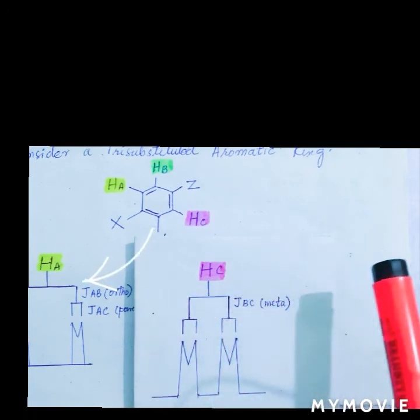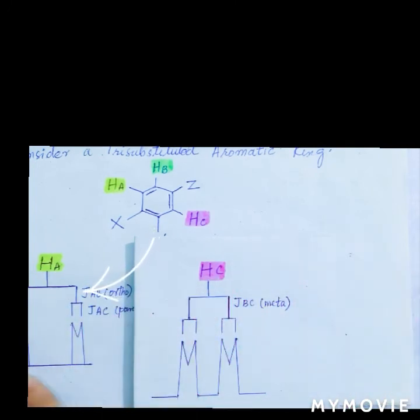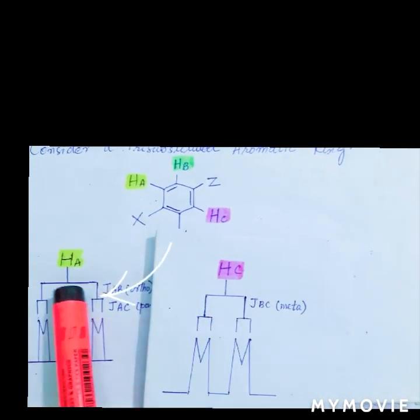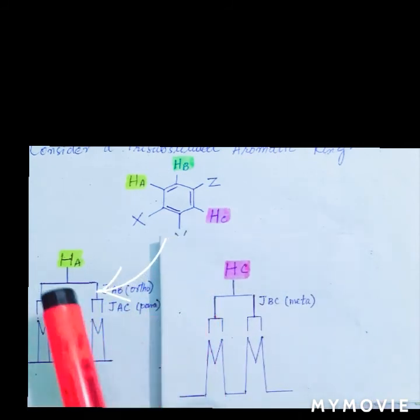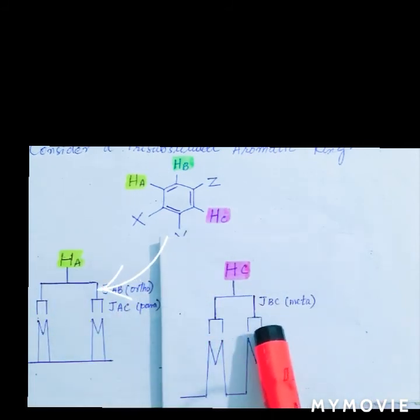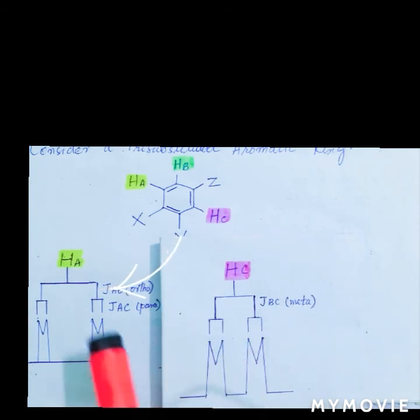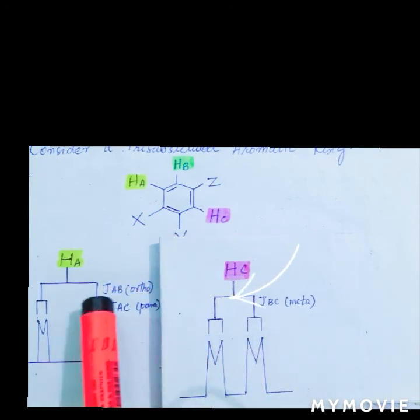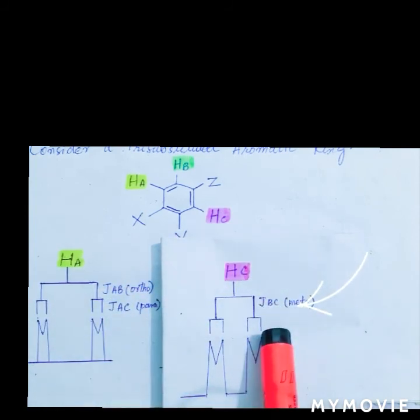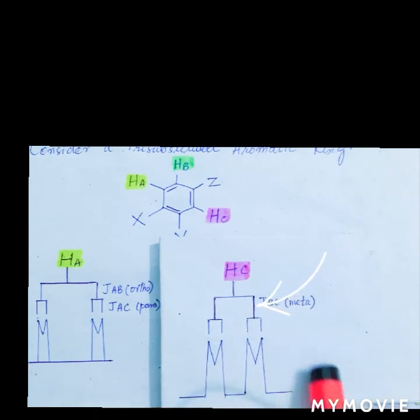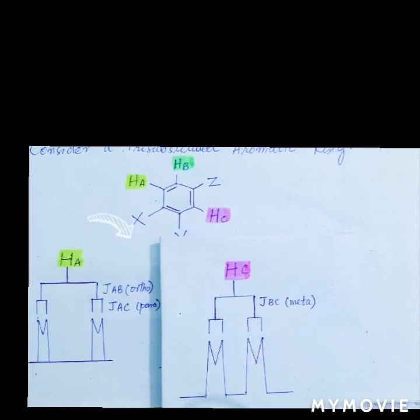The difference between HA and HC splitting is of the number one splitting in both of them. HA has ortho, and HC has meta in its first splitting. So both the signals are closer in HC, and in HA, the signals are at a wider distance.